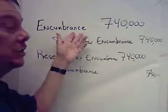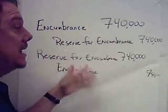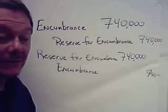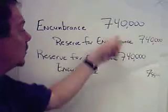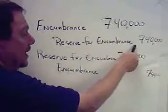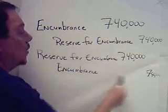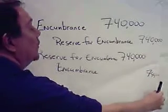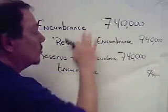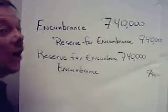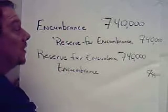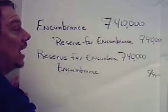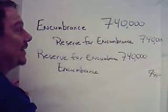The PO was issued and supplies are received at $741,000, but since we only encumbered $740,000, we reverse that original encumbrance for $740,000. I want you to be very comfortable with these two journal entries for ordering and receiving the supplies.